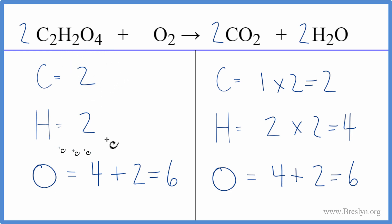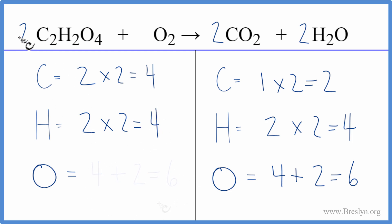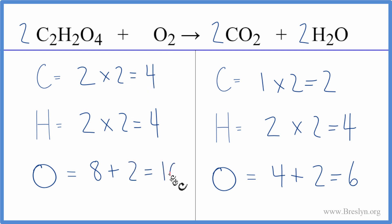Let's update these numbers. Two times two gives us four carbons. Two times two gives us four hydrogens. And for the oxygens: two times four is eight, plus two, that gives us ten oxygen atoms.